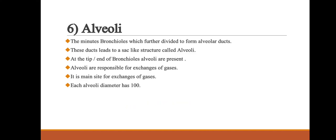Next, we discuss alveoli. The minute bronchioles further divide to form alveolar ducts. These ducts lead to a sac-like structure called alveoli. At the tip or end of the bronchioles, alveoli are present. Alveoli are responsible for the exchange of gases; they are the main site for gaseous exchange. Each alveolus has a diameter of about 100 micrometers.